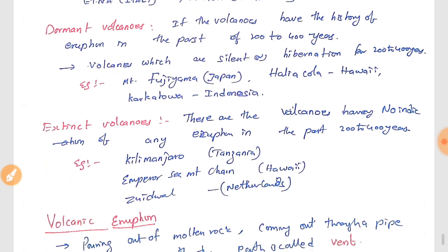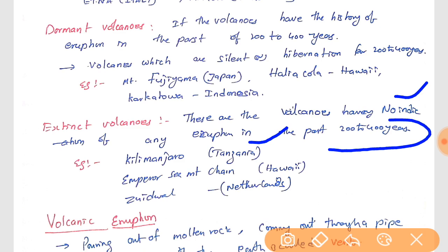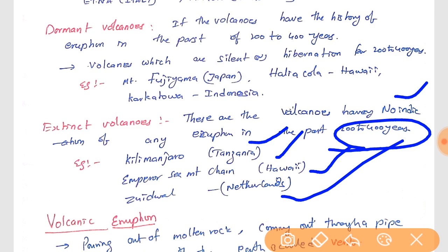Extinct volcanoes are those with no historical record of eruption in the past 200 to 400 years. Examples include Kilimanjaro, Emperor Seamount, Haleakala in Hawaii, and Zuidwal in Netherlands. Even extinct volcanoes are considered dangerous as we don't know when they might erupt again.